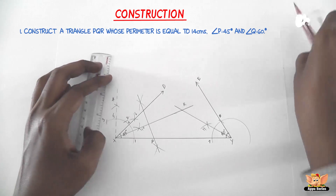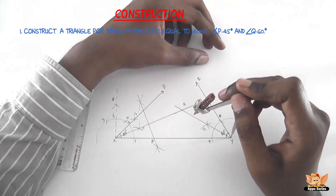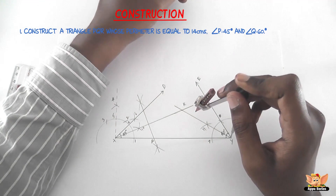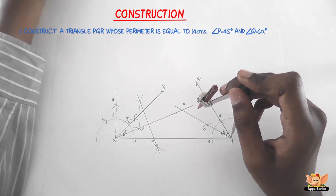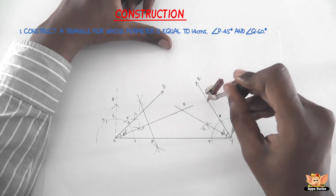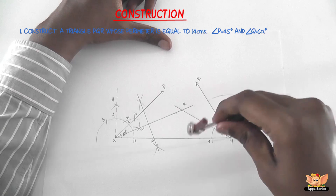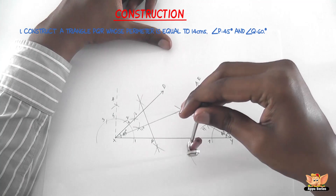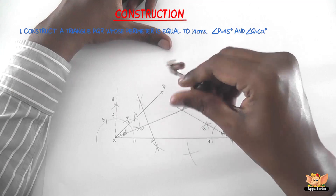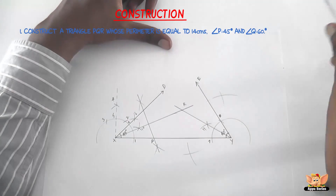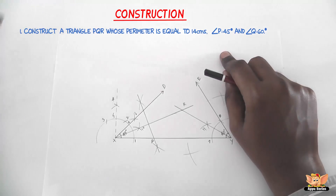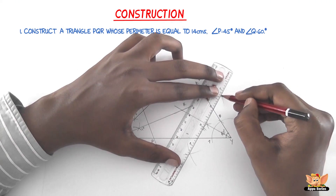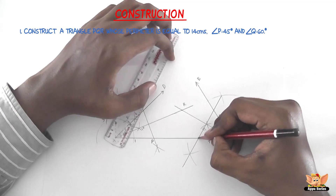Now find the perpendicular bisector of RY. With Y as center and radius more than half of RY, cut arcs on both sides of the line. With R as center and the same radius, cut the arcs just drawn. Join these two arc intersections — they meet at Q.